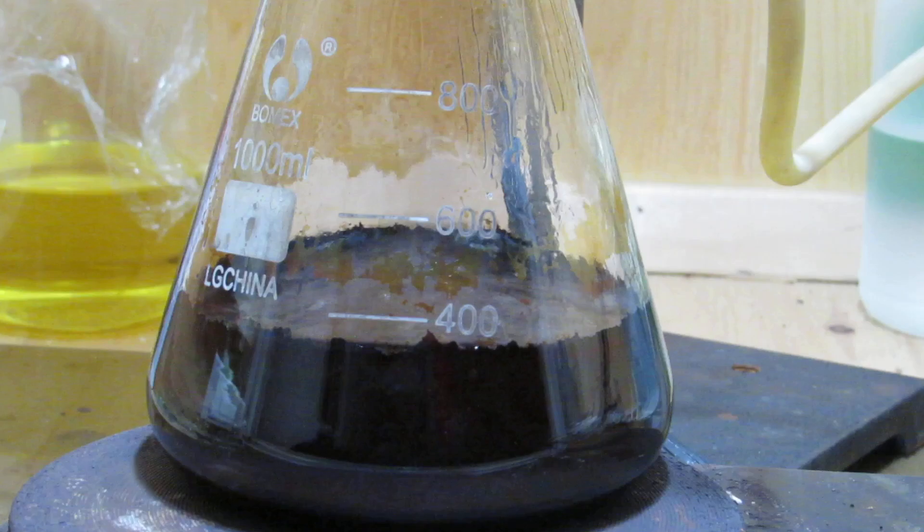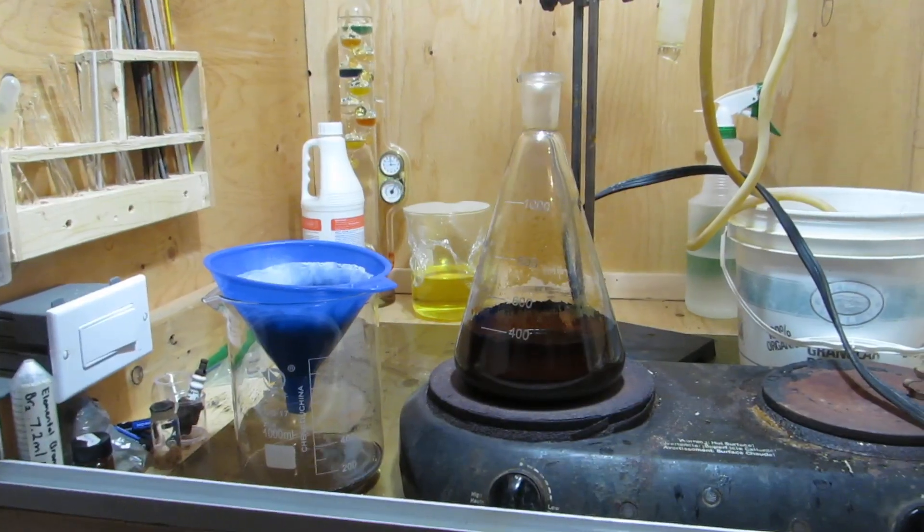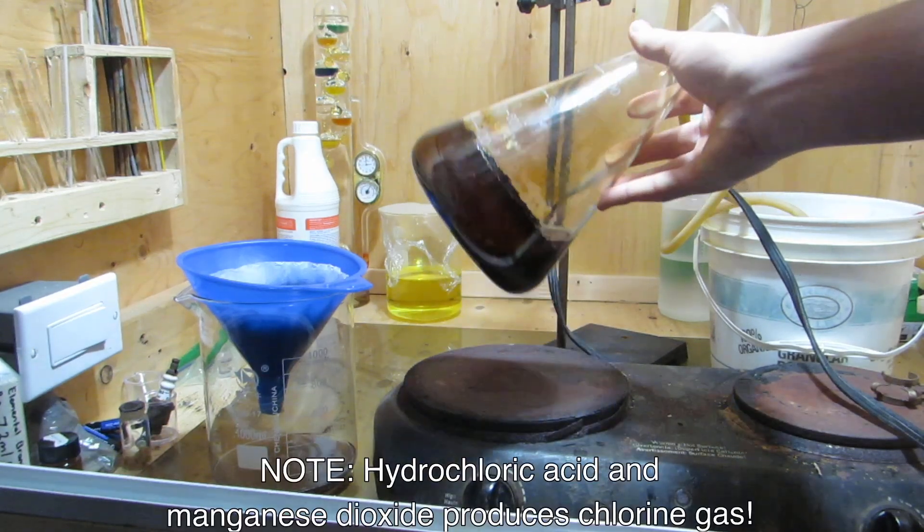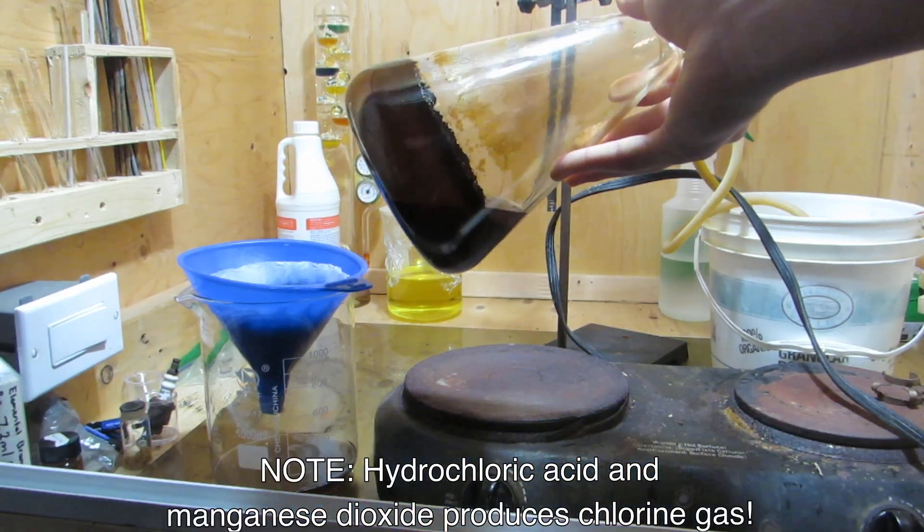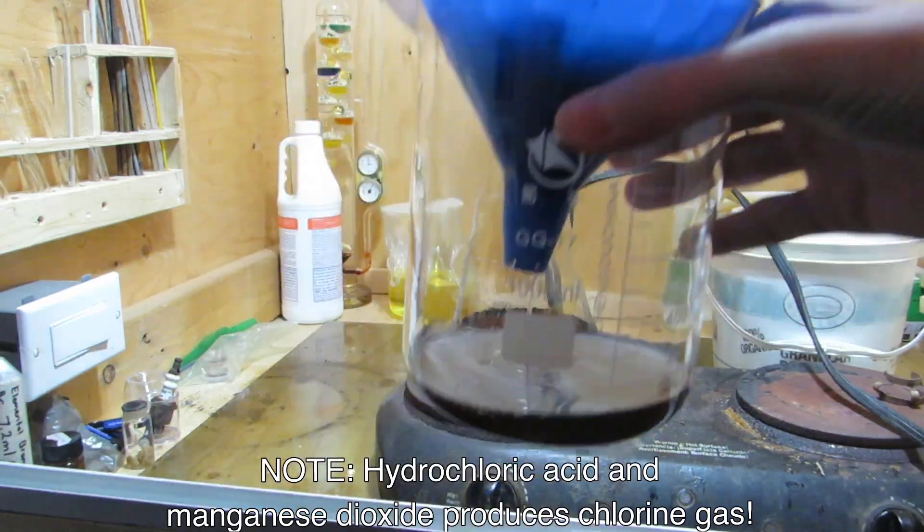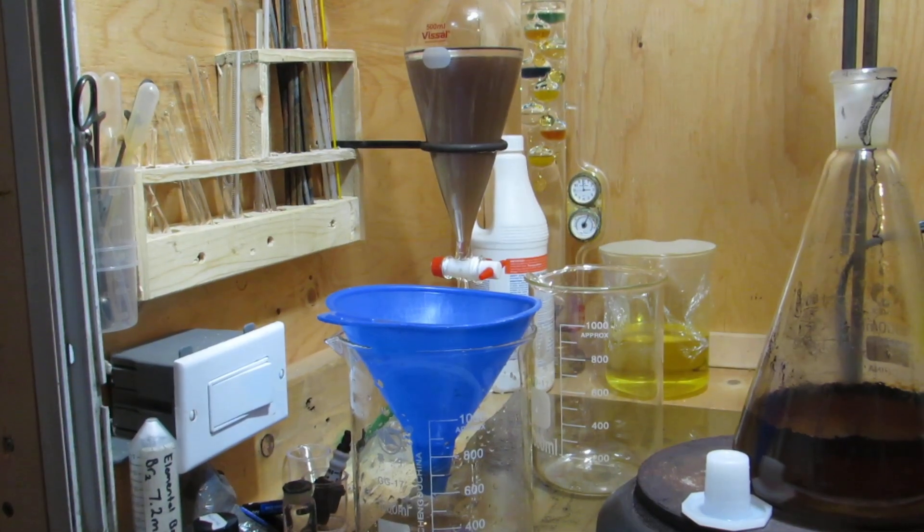Next, the mixture was filtered to remove the manganese dioxide. As a side note, some hydrochloric acid could be used to remove the manganese dioxide stuck to the glassware. This must be done outside or in a well-ventilated area, however, as chlorine gas is produced. The filtrate was then added to a separatory funnel.